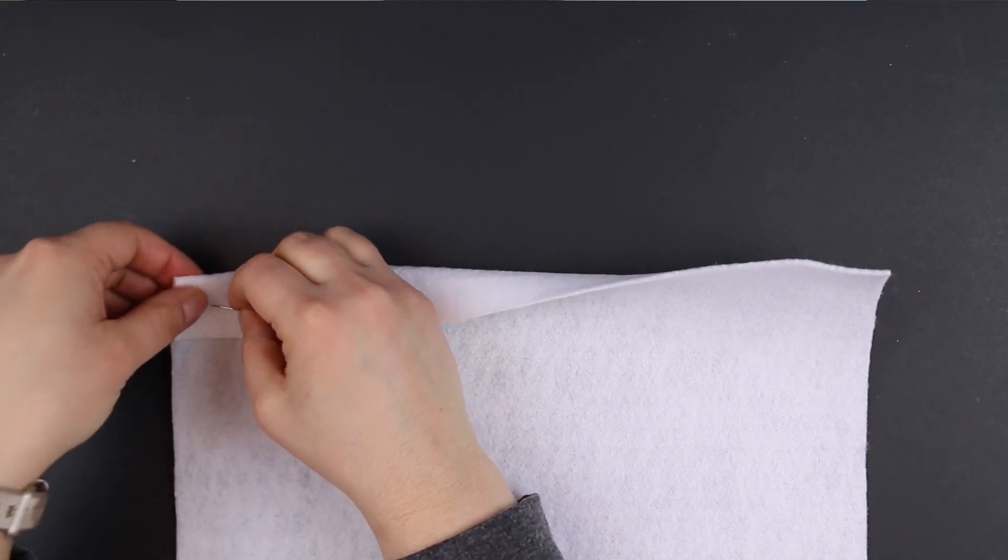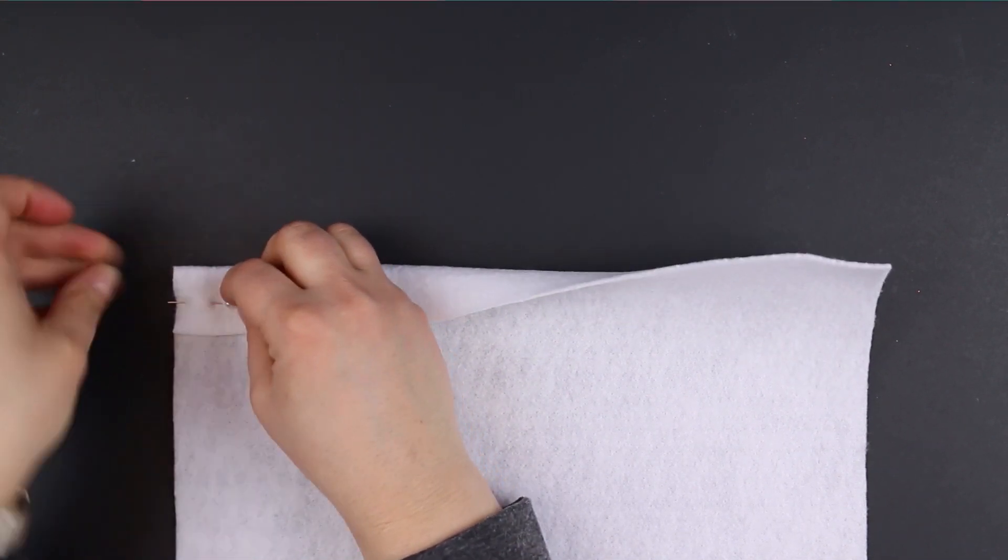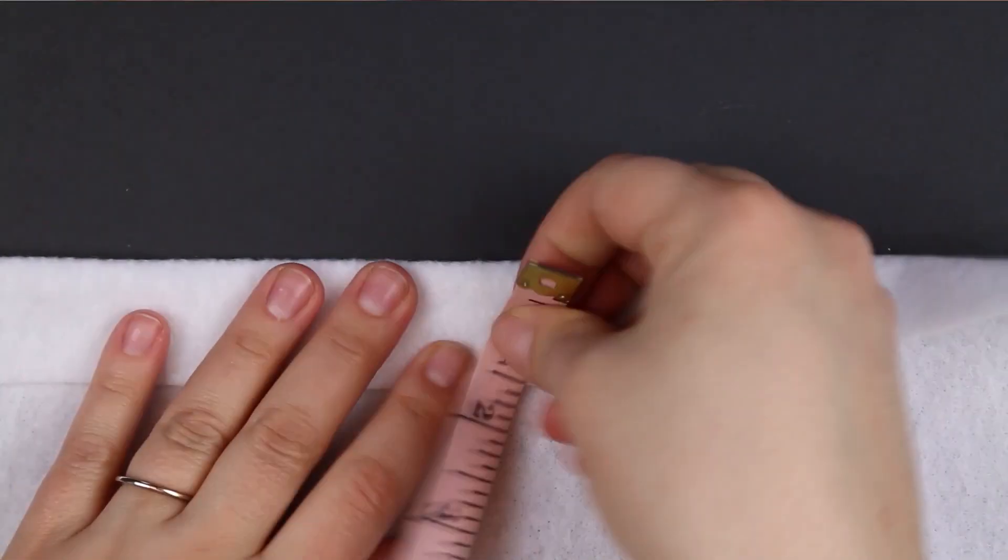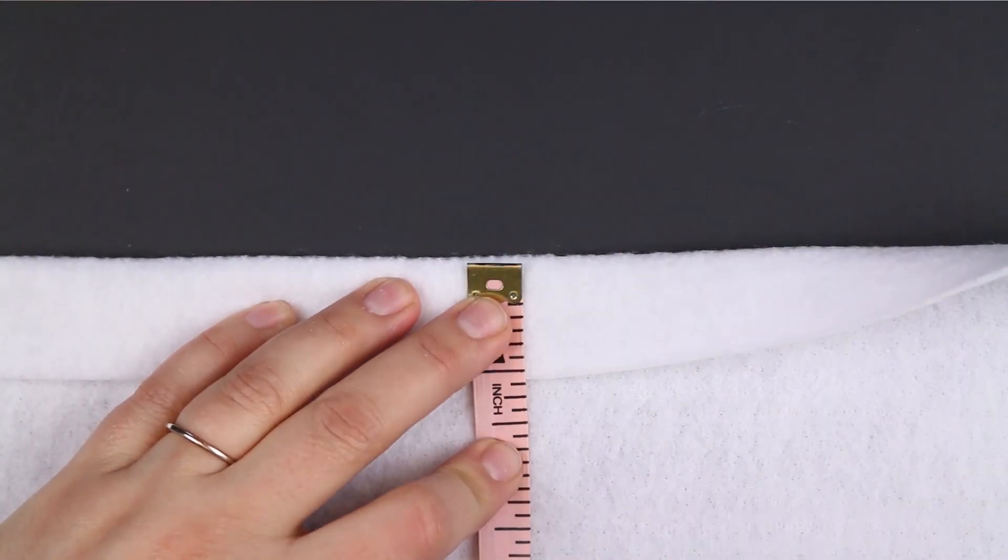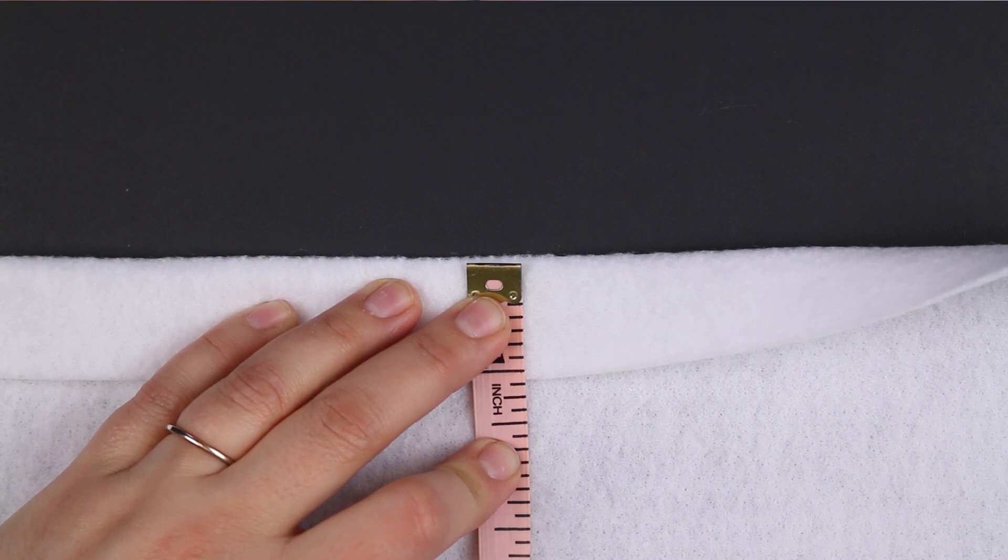I started by creating the pocket from which the banners will hang. I did that by creating a 1 inch seam from the short end of the felt. Just measure over 1 inch and then pin it in place.